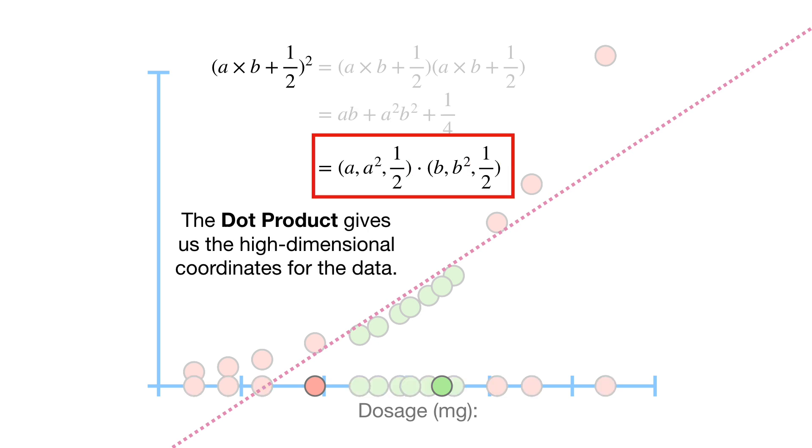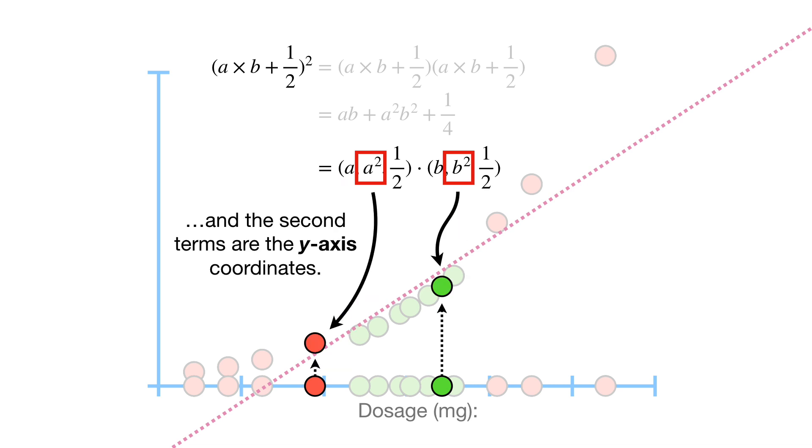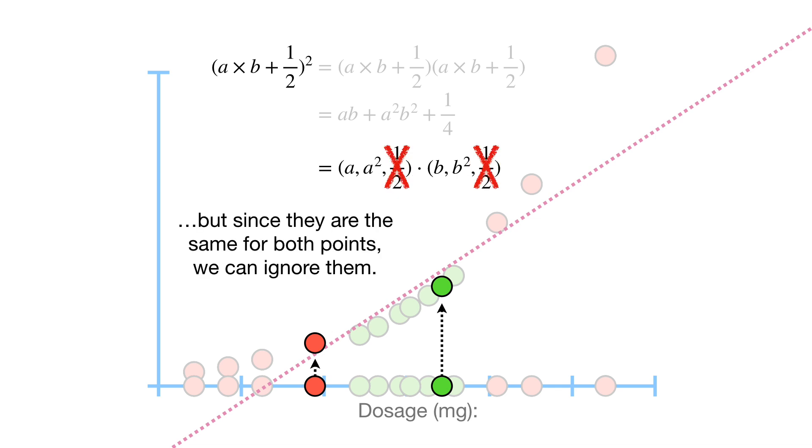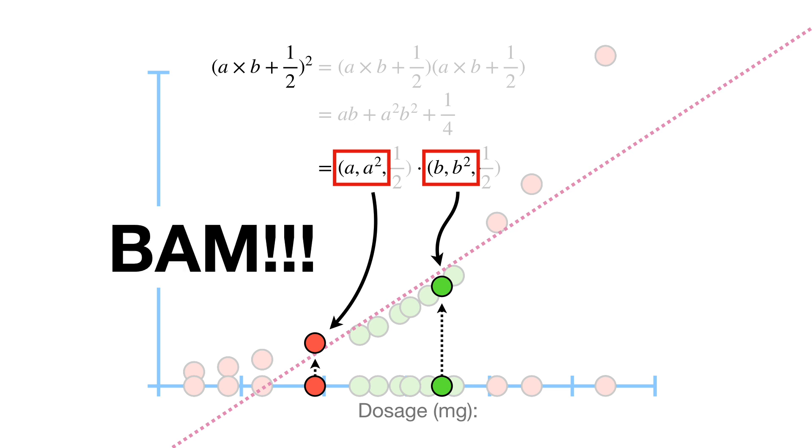The dot product gives us the high-dimensional coordinates for the data. The first terms are the x-axis coordinates, and the second terms are the y-axis coordinates. The third terms are z-axis coordinates, but since they are the same for both points, we can ignore them. Thus, we have x- and y-axis coordinates for the data in the higher dimension. BAM!